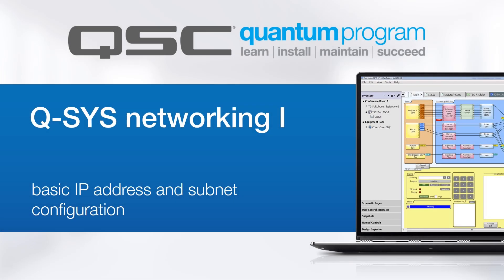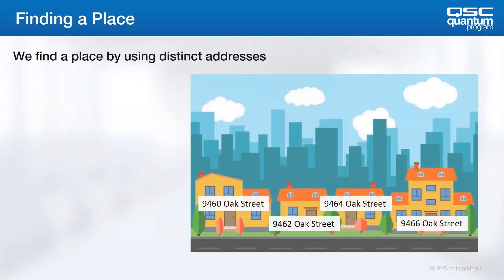Welcome to Q-SYS Networking One, which is part of our Q-SYS Quantum Training, an advanced service and troubleshooting curriculum. My name is Nathan McCarrick and I'll be giving you a look at some of the best practices in regard to IP addresses and subnet configuration within a Q-SYS system. A good way to understand Ethernet networking is to think of it in terms of street addresses and the roadways that connect them.